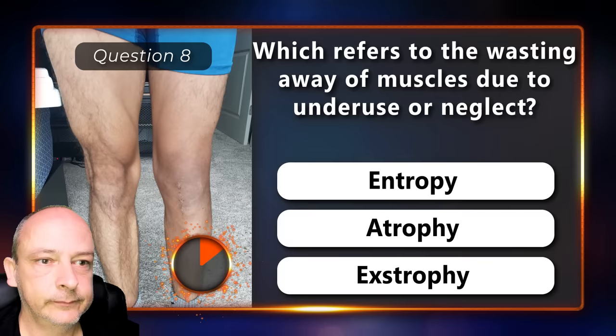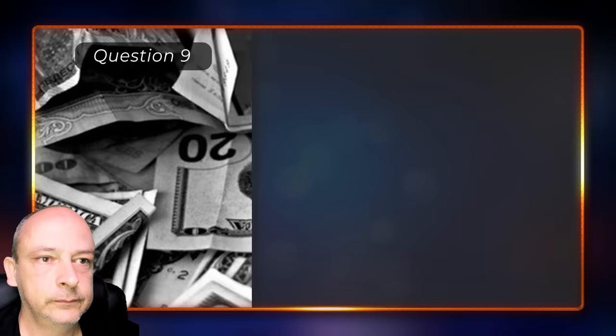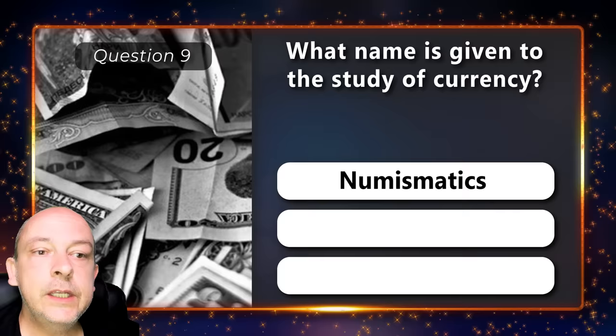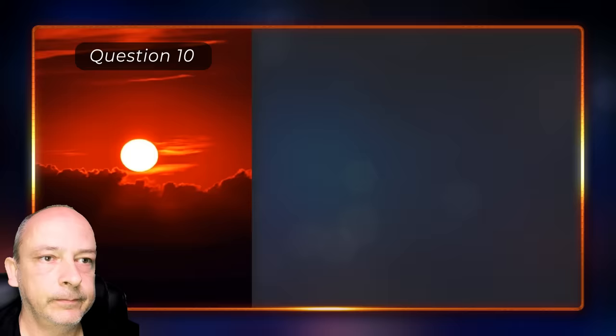Which refers to the wasting away of muscles due to underuse or neglect? Entropy, atrophy, or extrophy? It is atrophy. What name is given to the study of currency? Is it numismatics, numerology, or numeration? It is numismatics.